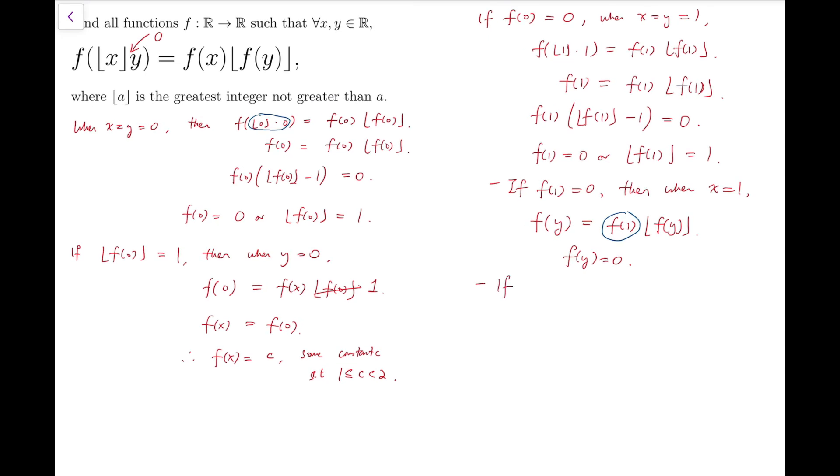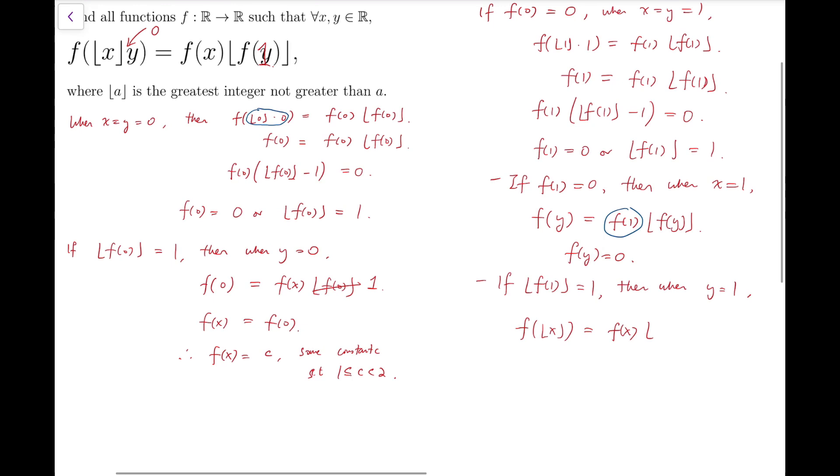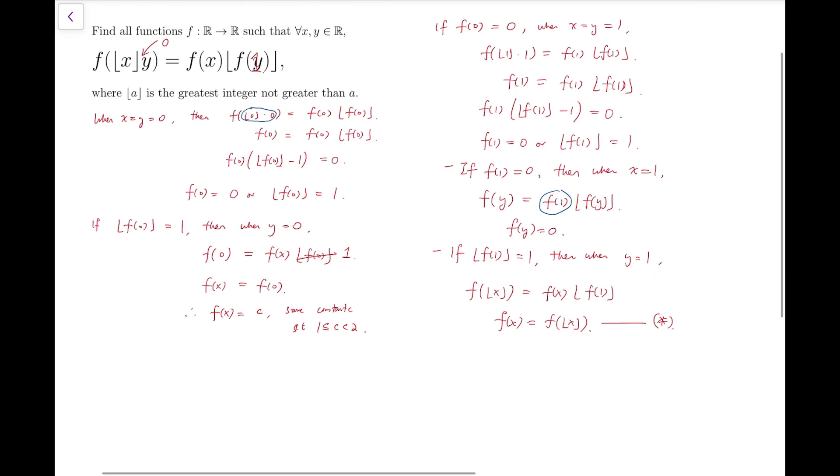And the second sub case is that if the floor function of f of 1 equals 1, then I'm going to put y equals 1. So I can create some other form of floor function of f of 1, which is here. Then f of floor function of x equals f of x times the floor function of f of 1. And so f of x equals f of the floor function of x. Now this is a very important result because no matter what value of x we have, I can just move it to its floor function, getting f of some integer.